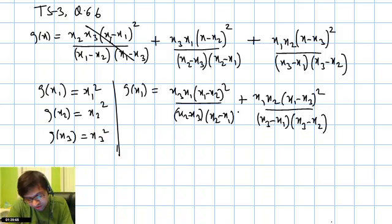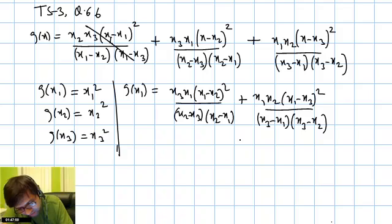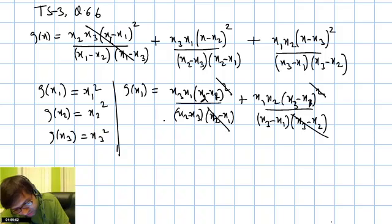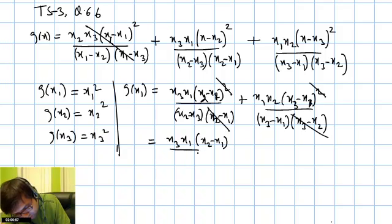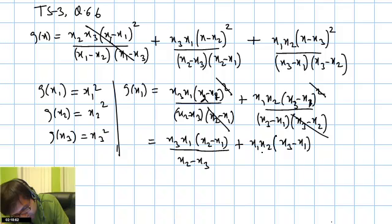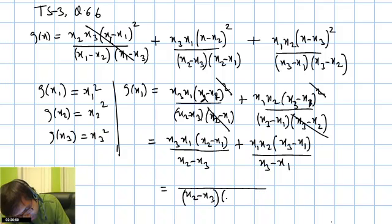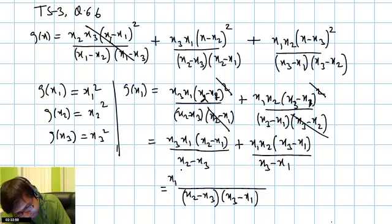This question is difficult because just looking at the expression, it's hard to see it simplifies to x1². We write (x1 - x2)² as a perfect square and cancel terms; similarly (x1 - x3)² as a perfect square. After cancellation, we get x3·x1·(x2 - x1) divided by (x2 - x3), plus x1·x2·(x3 - x1) divided by (x3 - x1). Taking LCM as (x2 - x3)·(x3 - x1).